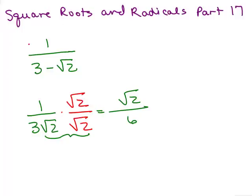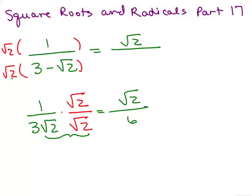That doesn't work in this case — you might think it does, but let's try it. If you multiply the top and bottom by square root of 2, in the numerator you get square root of 2, and in the denominator you use the distributive property: square root of 2 times 3 is 3 square roots of 2, minus square root of 2 times square root of 2 which is 2. You can't cancel those square roots of 2 because they're not factors. So we made a bigger mess: square root of 2 over 3 square roots of 2 minus 2. That trick did not work.